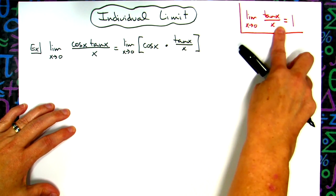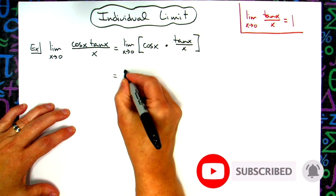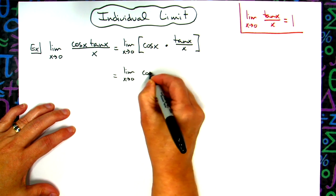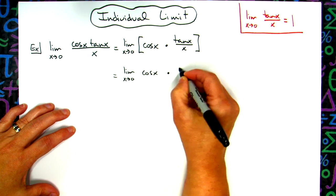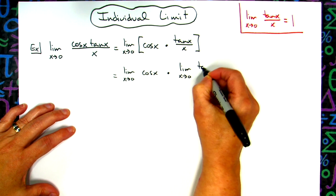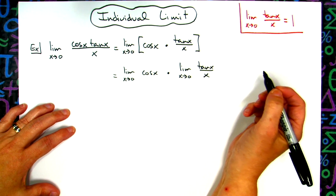I know this limit is 1, so I can use my properties of limits and I can say the limit as x approaches 0 of cosine x times the limit as x approaches 0 of this tangent x over x. Nothing more than using limit properties right there.